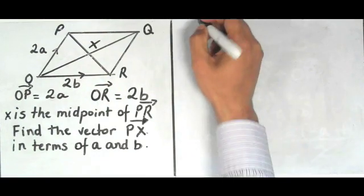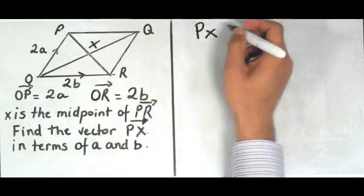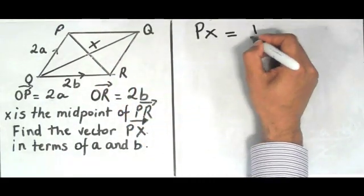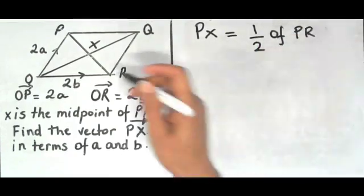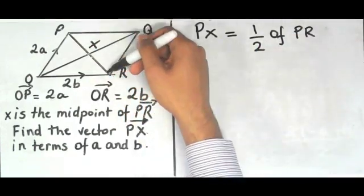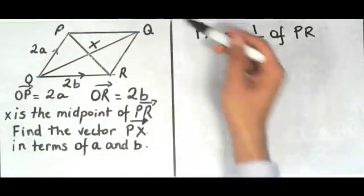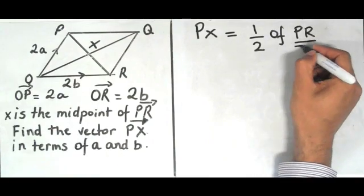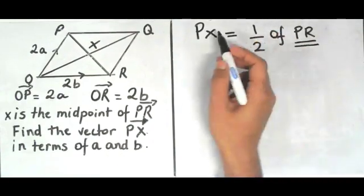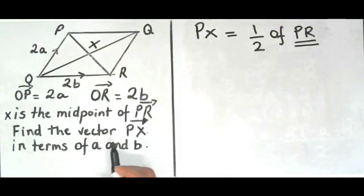Alright, so let's get started. The first thing you need to realize is that PX, the vector P to X, is equal to half of PR. So as you can see here I've got PR and X is in the middle. So therefore PX is half of PR. Now if I can work out what PR is and then half it, then this will give me what PX is and that's what I'm looking for.